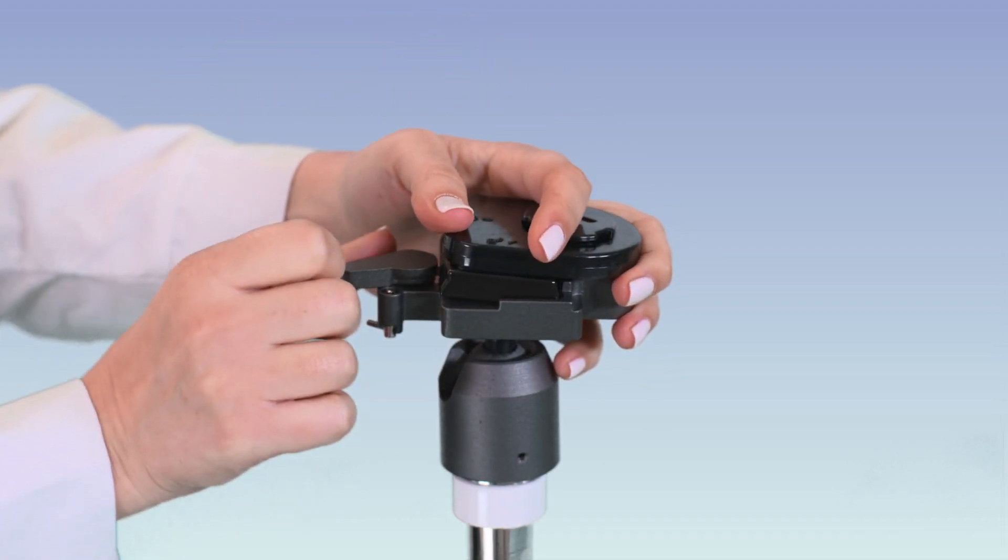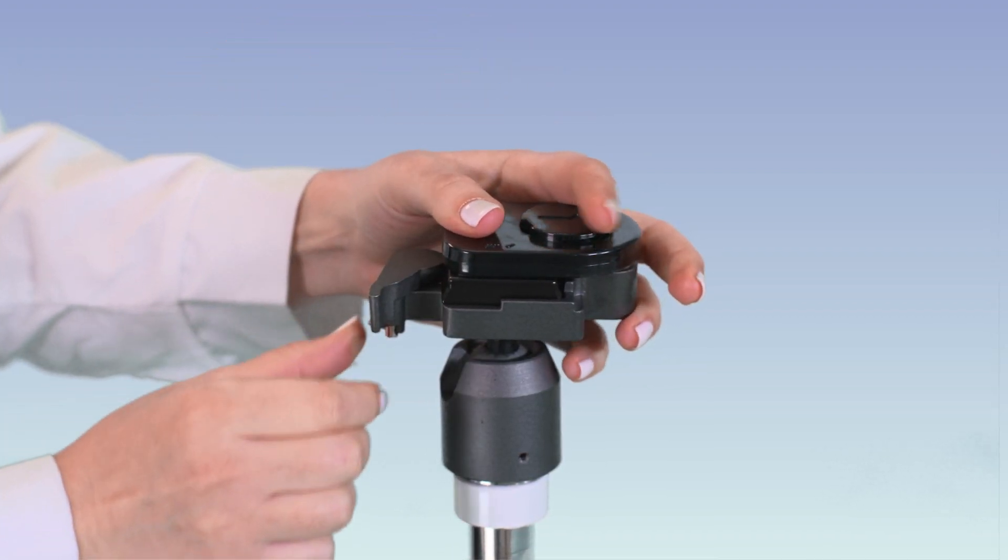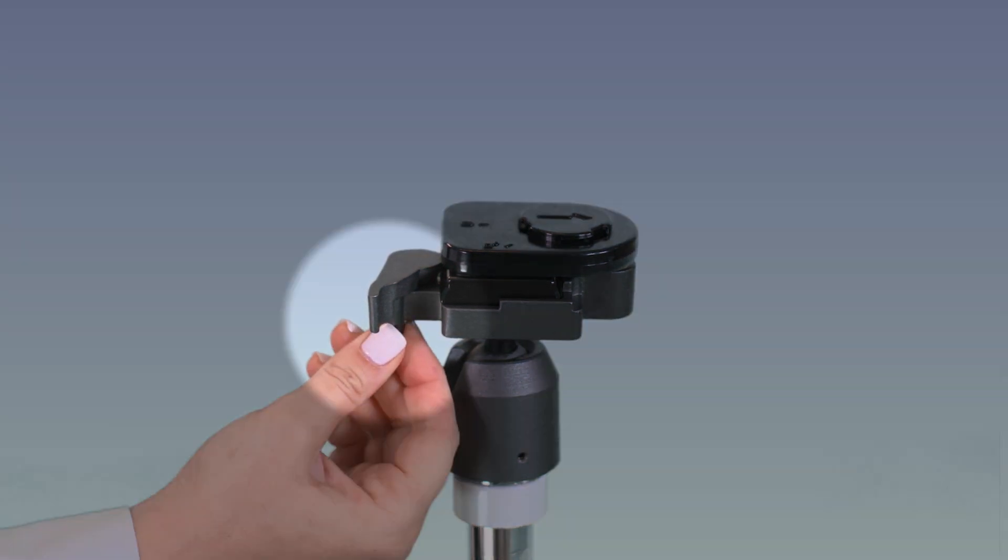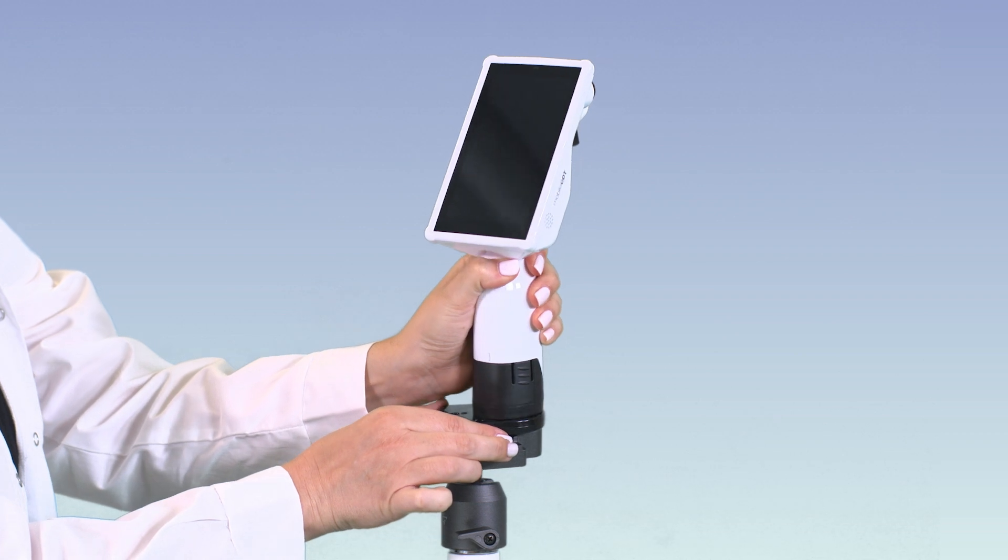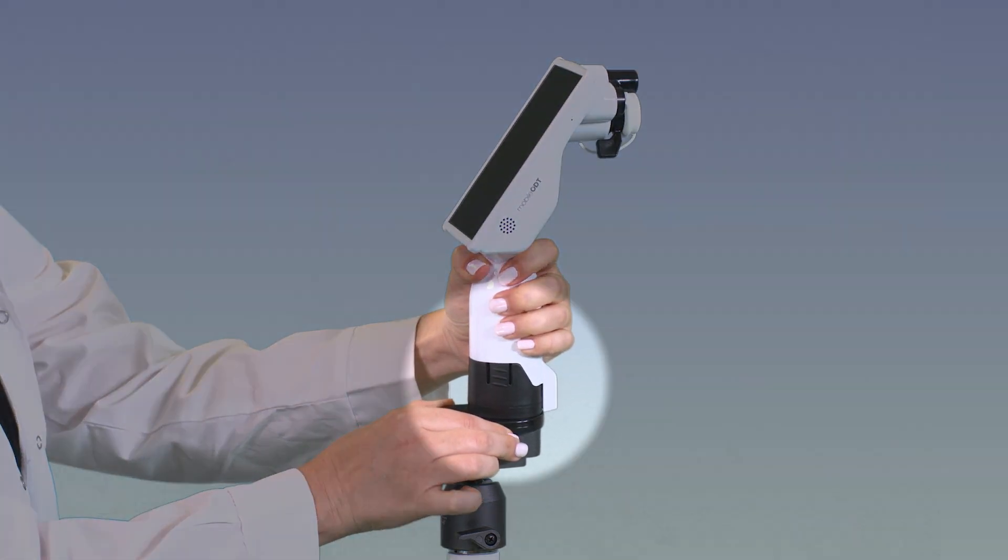Connect the plate to the stand and lock it. Now you can connect the EVA-PRO to the adapter, using a turn movement until it's stable.